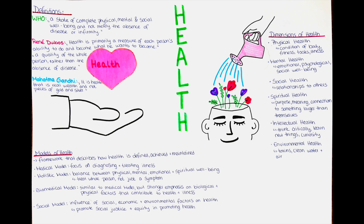However, the WHO's definition of health has also been criticized for its idealistic and unattainable nature. The concept of complete physical, mental and social well-being is difficult to achieve and for many people it may be impossible. Additionally, the emphasis on well-being may overlook the realities of illness and disability, which are an inevitable part of the human experience.